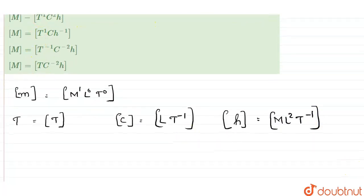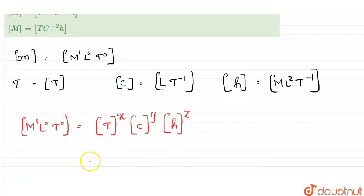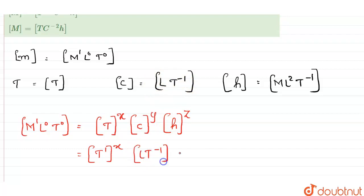Now, if we want to express mass in terms of these three, we can write M¹L⁰T⁰ = T^x · C^y · H^z. Substituting: T raised to x, then LT⁻¹ raised to y for c, and ML²T⁻¹ raised to z for h.